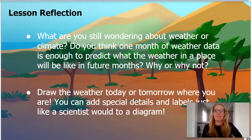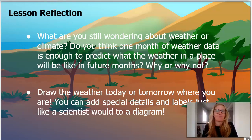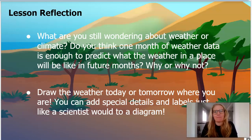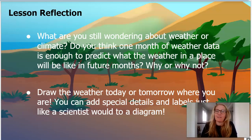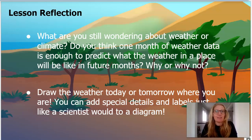For your lesson reflection today, at the very end of chapter 2, you have a couple of challenges to pick from, or do both. The first question says, what are you still wondering about weather and climate? Do you think one month of weather data is still enough to predict what the weather in a place will be like for future months — why or why not? Your second challenge is to draw the weather today or tomorrow where you are. You can add special details and labels, just like a scientist would, to a diagram.